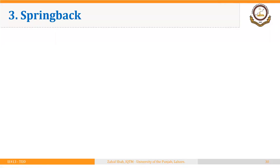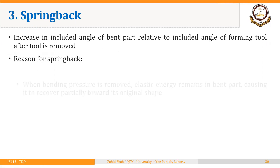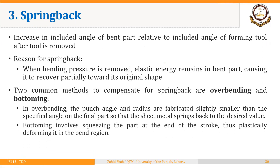One important phenomenon that occurs in sheet metal bending is springback. Springback is the increase in the included angle of a bent part relative to the included angle of the forming tool after the tool is removed. So this is an increase in the included angle or a decrease in the bend angle.